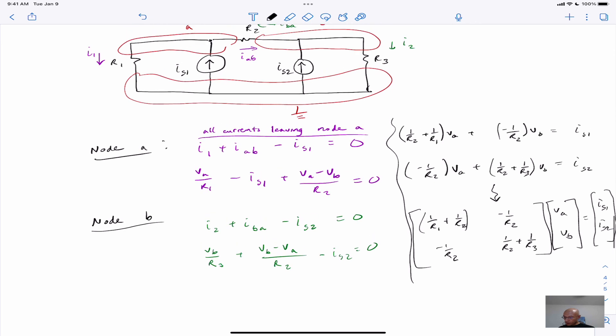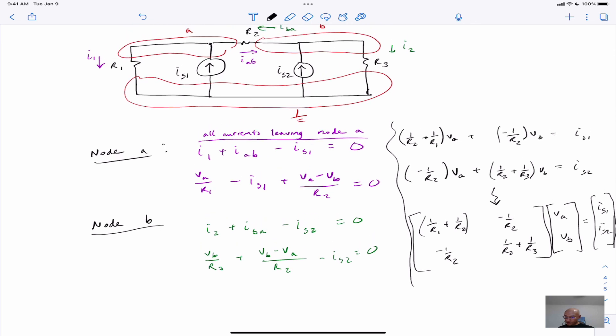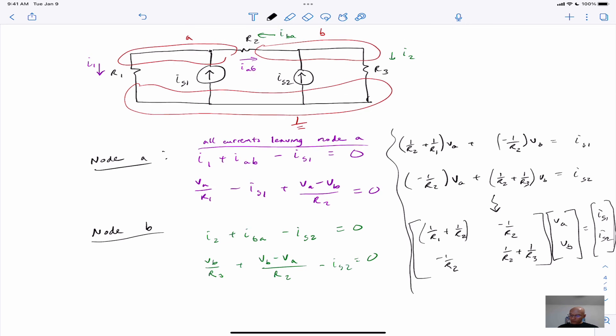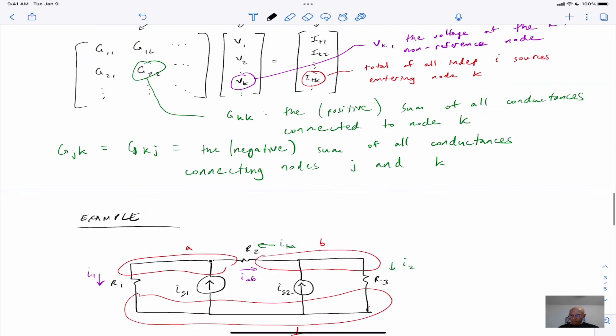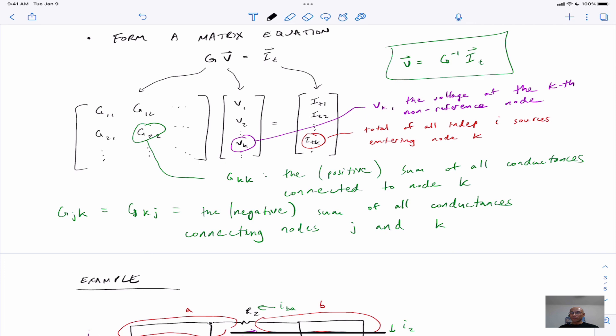So we have the G12 element is equal to the G21 element. And then the total source currents entering each node are on the far right. So that's just an example of how we might do a circuit that's eligible for this by inspection node analysis. Hope you found that helpful. I hope that helps you get set up to do some examples. Remember to like the video, subscribe to the channel, and have a great day.